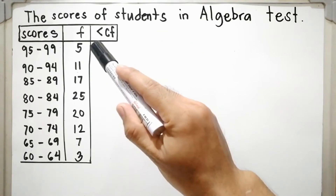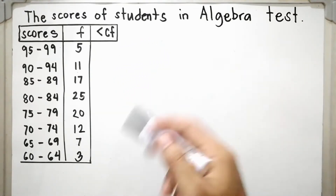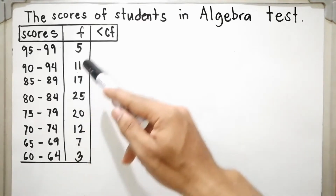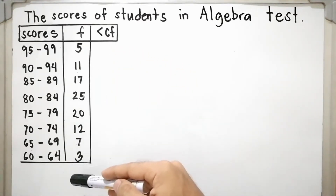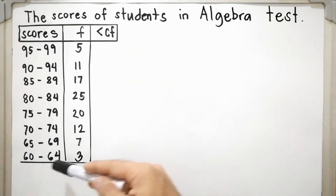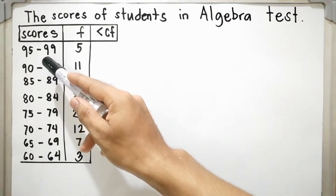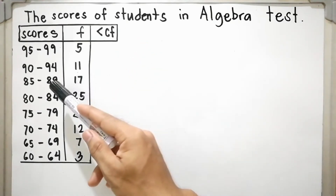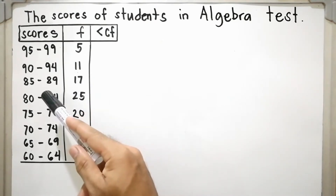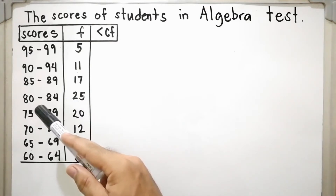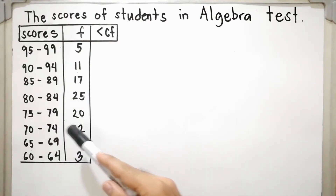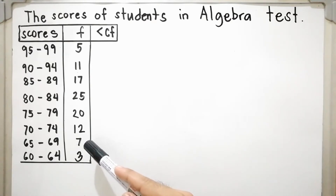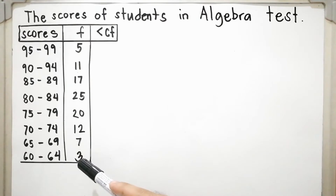Let us have an example — the scores of students in algebra tests. As you can see, it is arranged using a frequency distribution table where the scores are in class intervals and the respondents are in frequency. For 95–99 there are 5 students; 90–94 has 11; 85–89 has 17; 80–84 has 25; 75–79 has 20; 70–74 has 12; 65–69 has 7; and 60–64 has 3 students.